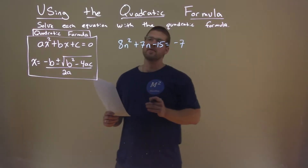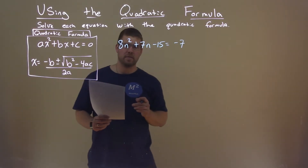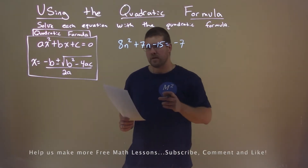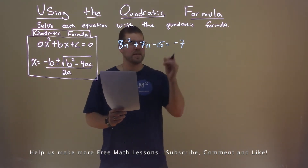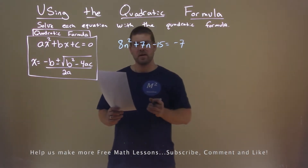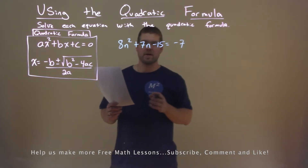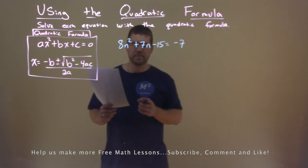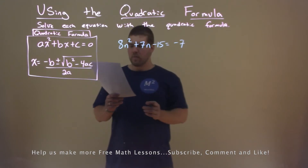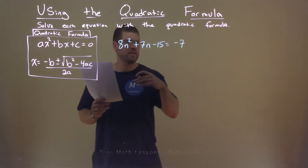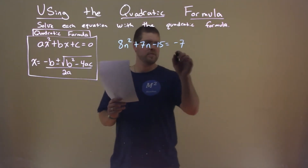We're given this problem right here: 8n squared plus 7n minus 15 equals negative 7, and we want to solve this using the quadratic formula.